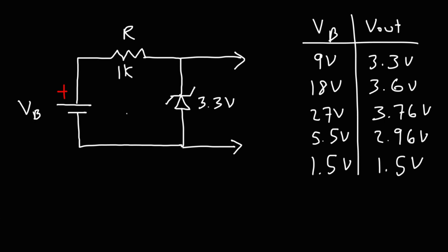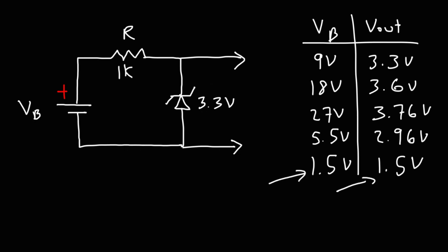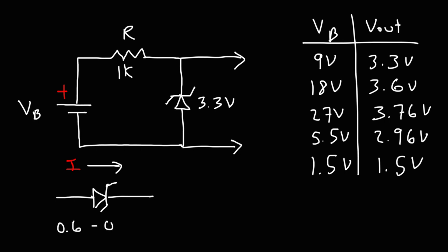Ideally speaking, when you use a voltage that's higher than the zener voltage, the output voltage is going to be close to the zener voltage. If the voltage drops too low, the output voltage will be the same as the voltage of the battery. The zener diode is in reverse bias mode in this circuit. In forward bias mode, where current is flowing in the other direction, the voltage drop is similar to a typical silicon diode, which can vary between 0.6 to 0.8 volts depending on how much current is flowing.